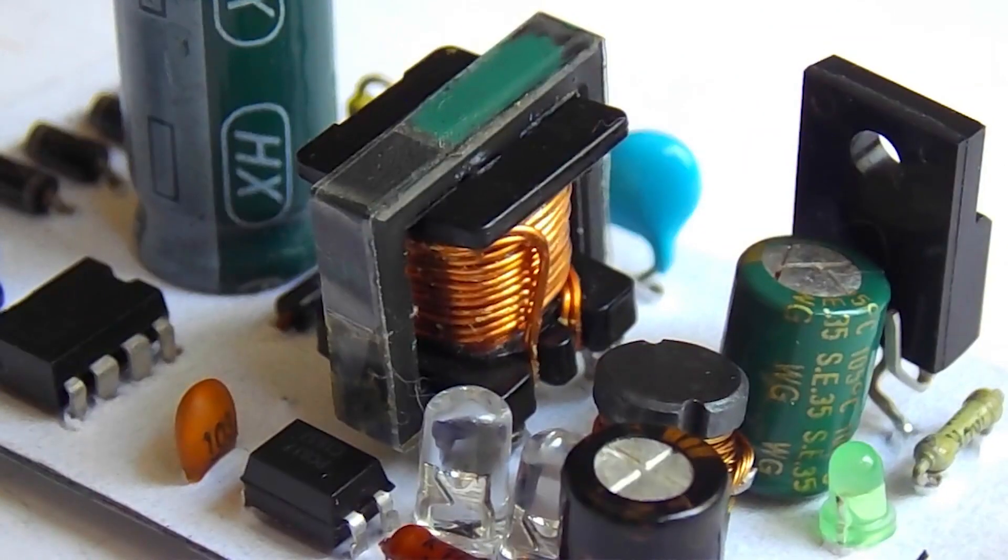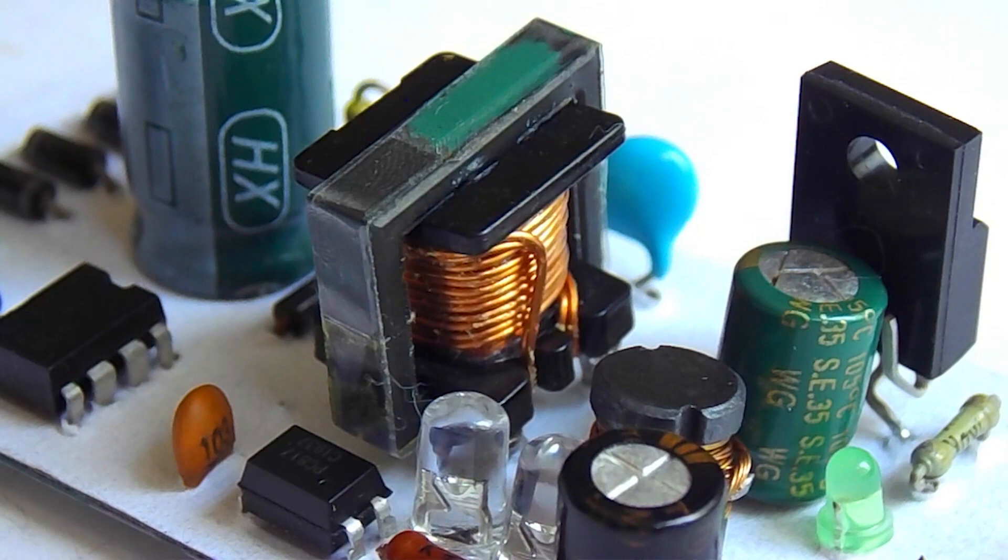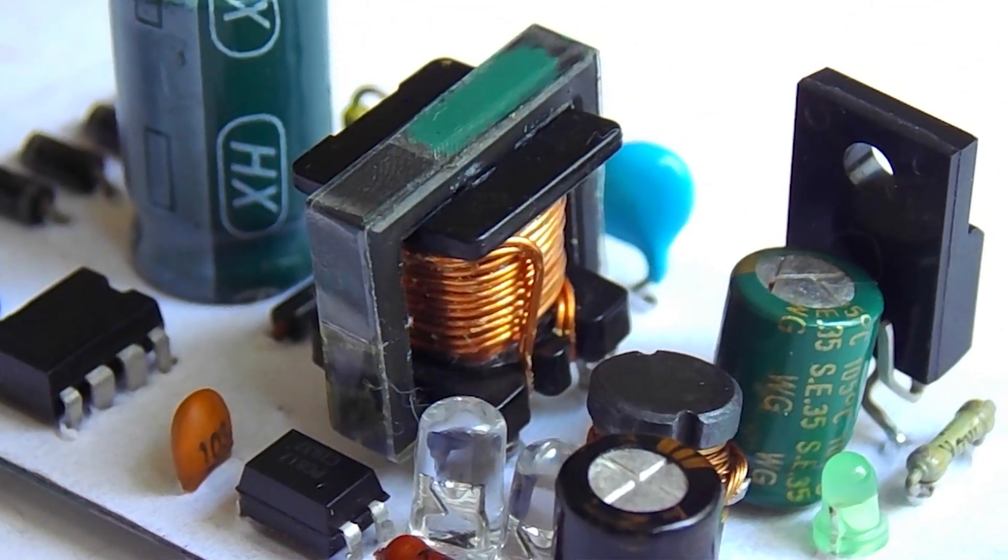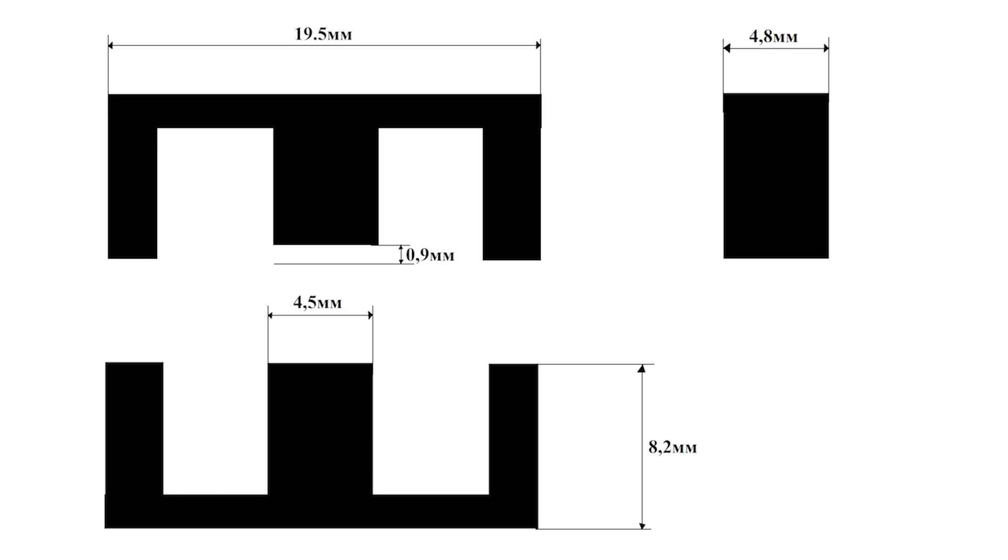Now let's talk about the transformer. I did not divide the primary winding into two parts as in the previous power supply, and I wound the secondary winding directly on the primary winding. The core I used is exactly the same size as in the previous power supply.